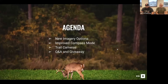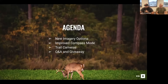We've got a pretty cool suite of features to highlight today. Some things we're talking about are already live in the app, and some are about ready to come out in the coming weeks and months — you'll get a sneak preview. Tonight we'll cover new aerial imagery options, our improved compass mode and rangefinder feature, a deep dive on trail cameras with Gary, and then Q&A plus a hat giveaway at the end.